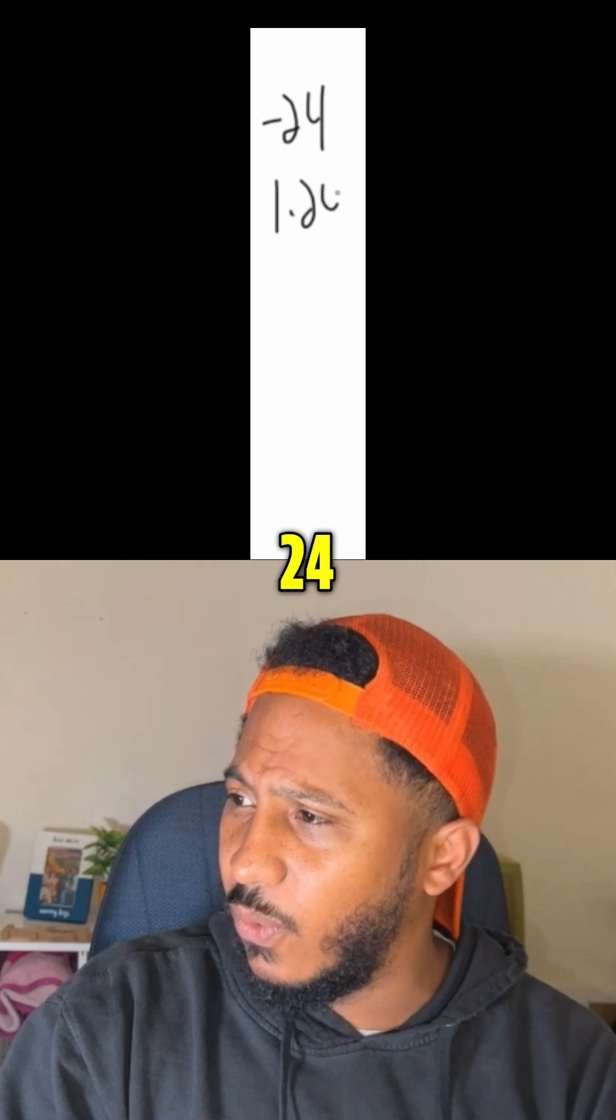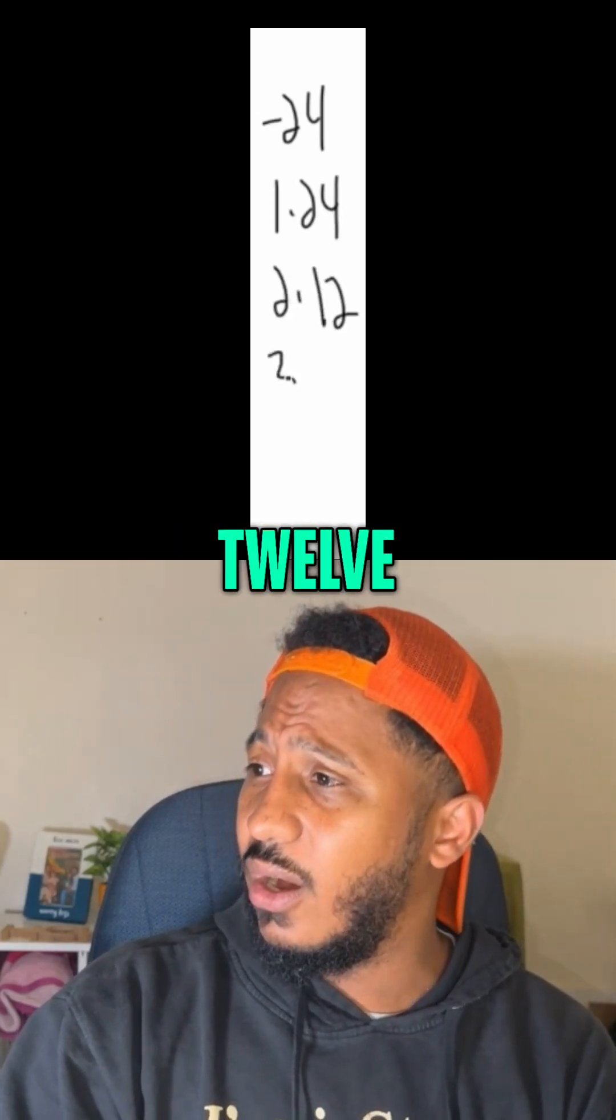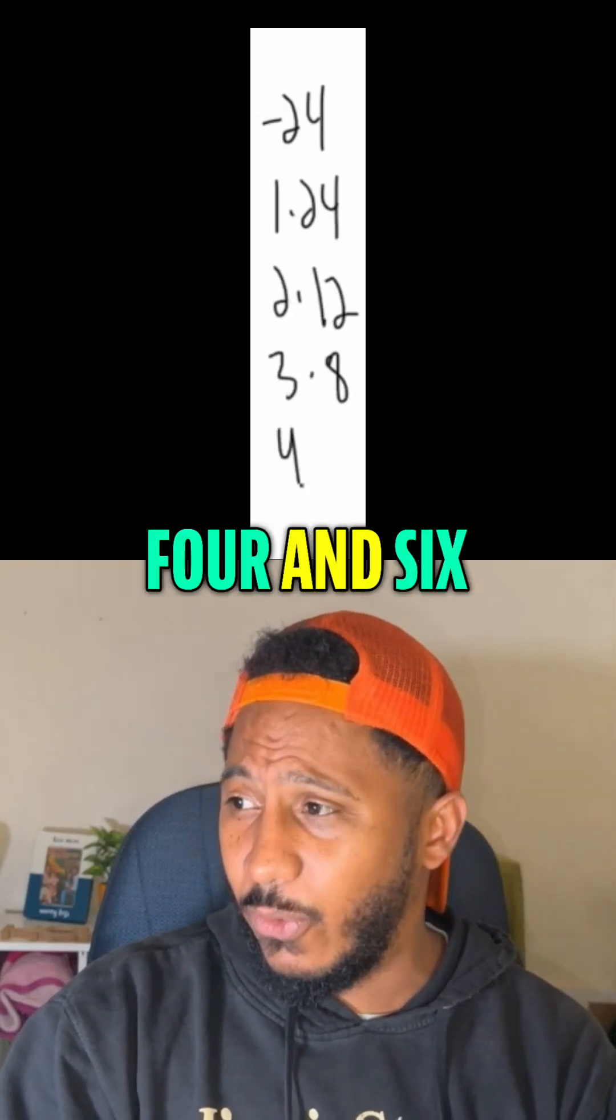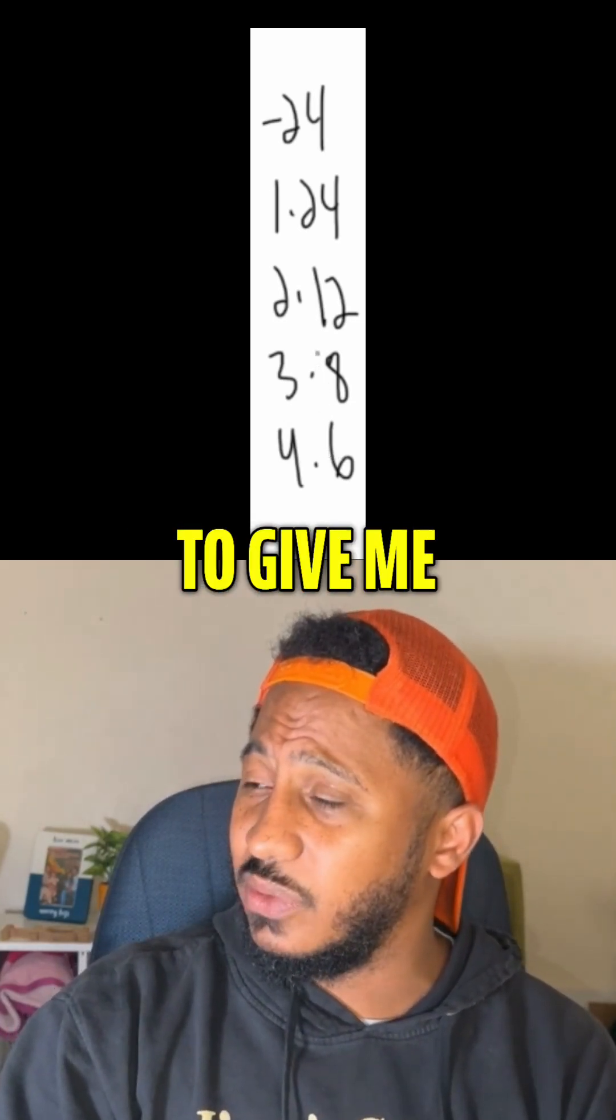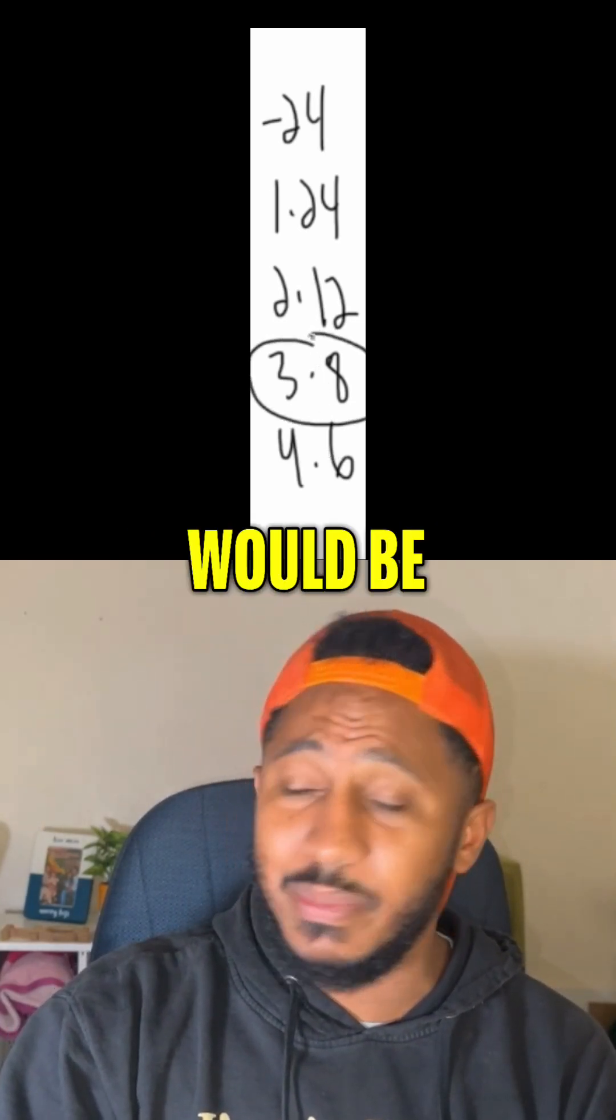We need whole numbers. Like one and 24, two and 12, three and eight, four and six. The only whole numbers that multiply to give me negative 24 but combine to give me that five would be three and eight.